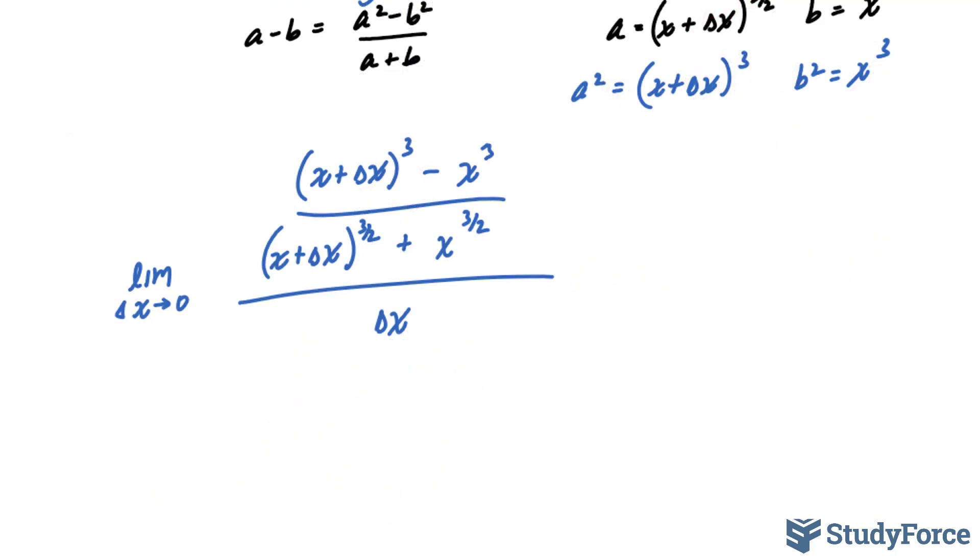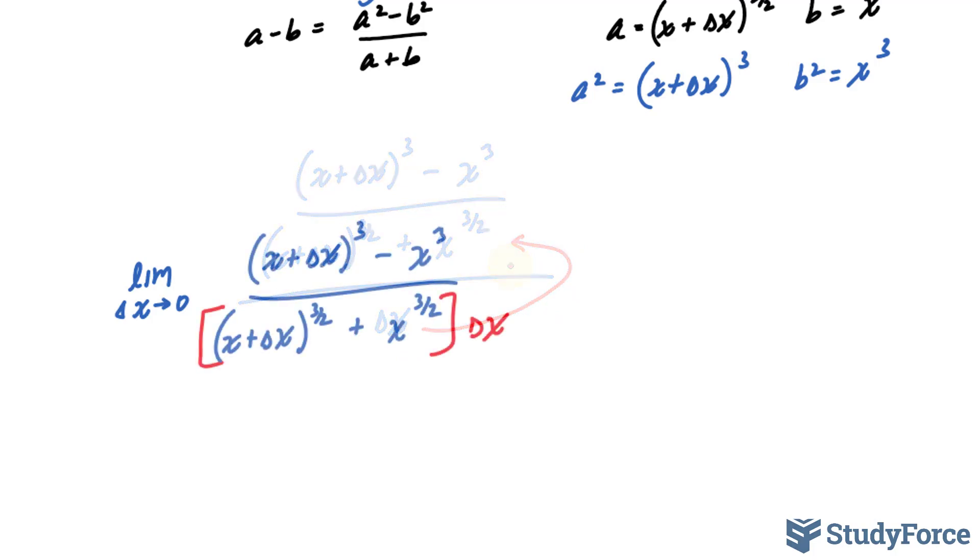Now if we simplify this, this delta x will go into the denominator and you'll end up with something that looks like this. Notice now that it's a factor in the denominator. If we apply the limit at this stage, if I put a zero into here, I'll end up with still an error. I still can't take the limit even though I just did this algebraic manipulation.